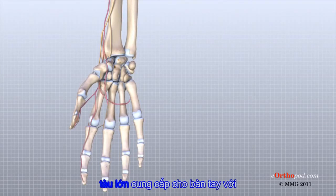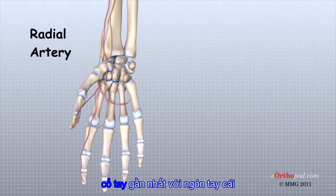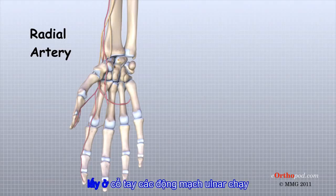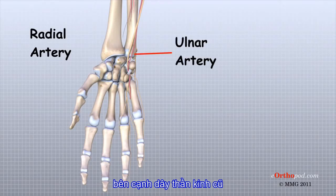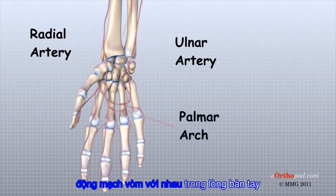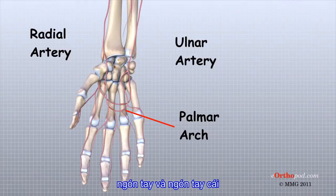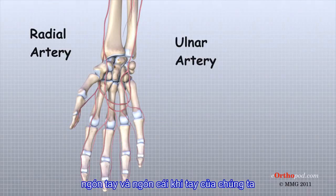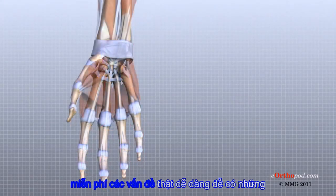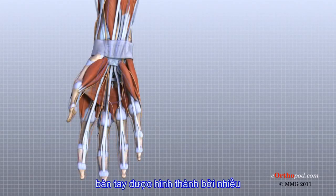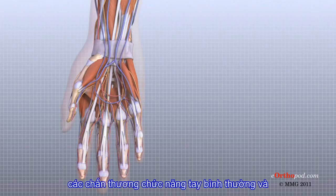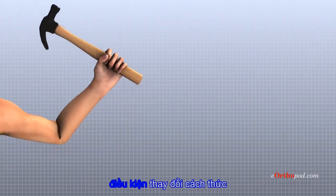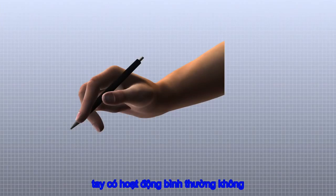Traveling along with the nerves are the large vessels that supply the hand with blood. The largest artery is the radial artery, which travels across the front of the wrist closest to the thumb. The radial artery is where the pulse is taken in the wrist. The ulnar artery runs next to the ulnar nerve through Guyon's Canal. The ulnar and radial arteries arch together within the palm of the hand, supplying the front of the hand, fingers, and thumb. Other arteries travel across the back of the wrist to supply the back of the hand, fingers, and thumb. When our hands are free of problems, it's easy to take the complex anatomy of the hand for granted. The hand is formed by numerous structures, each with an important role in normal hand function. Injuries and conditions that change the way these structures work can greatly impact whether the hand functions normally.